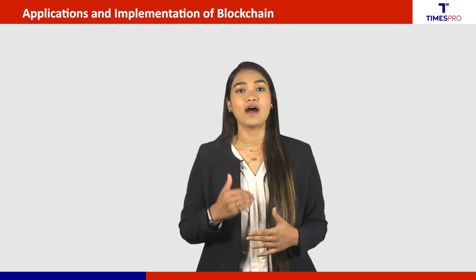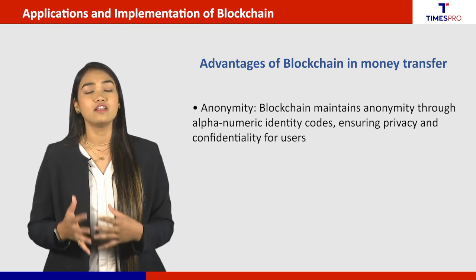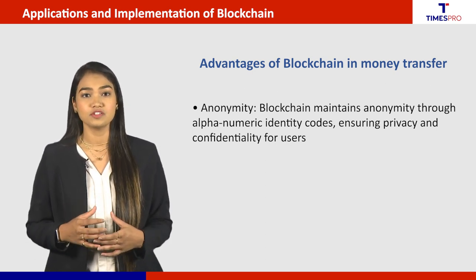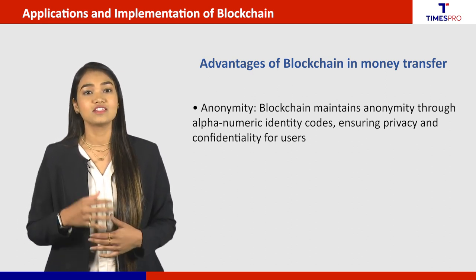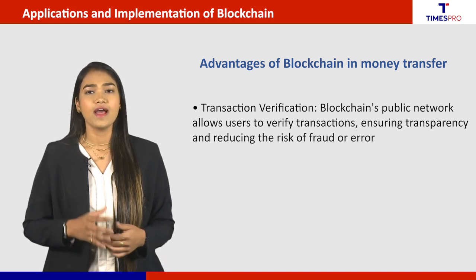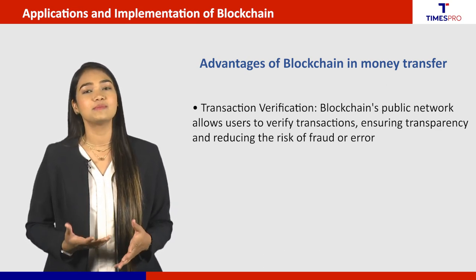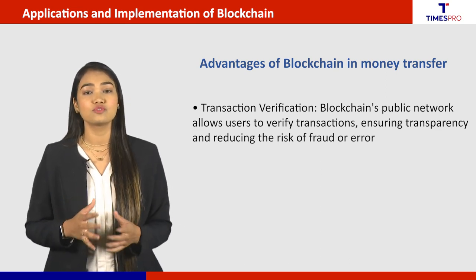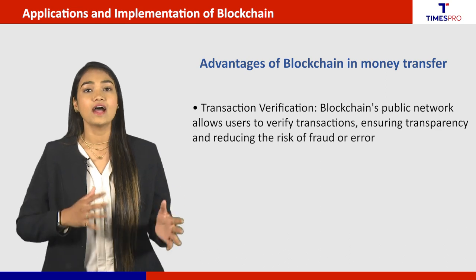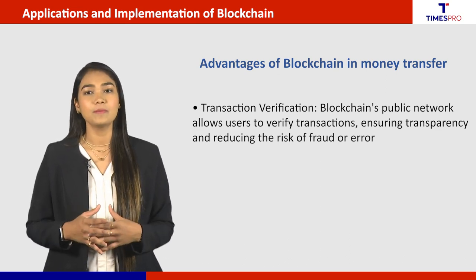With that, we get multiple other advantages. The anonymity of the user is maintained. Users have an alphanumeric identity code which safeguards their anonymity — no one can know the person behind the ID. This is done with cryptography and hashing techniques. Transactions can be verified by users. As blockchain is a public network, all transactions are transparent and visible to all, with read-only access. Users can cross-verify their transactions and keep track of all records without any intermediary.